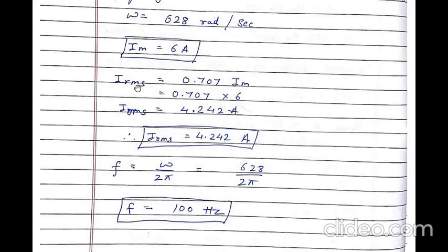Next, to calculate RMS value: Irms is equal to 0.707 into Im. Substituting Im as 6, Irms is equal to 0.707 into 6, giving Irms equal to 4.242 ampere. To calculate frequency: frequency is equal to omega upon 2π. We know omega is equal to 628, so f is equal to 628 divided by 2π, giving frequency f equal to 100 hertz.